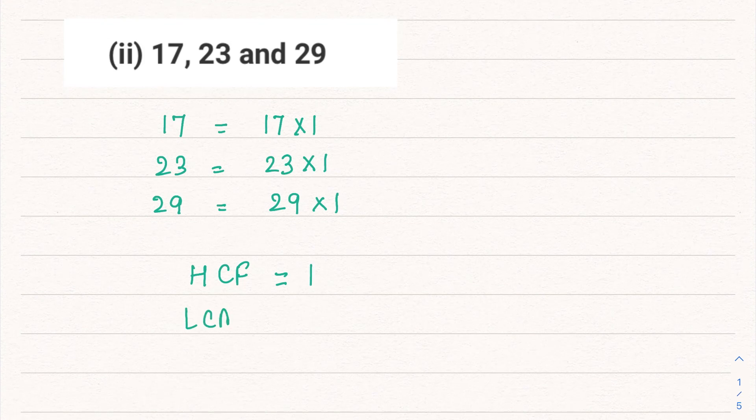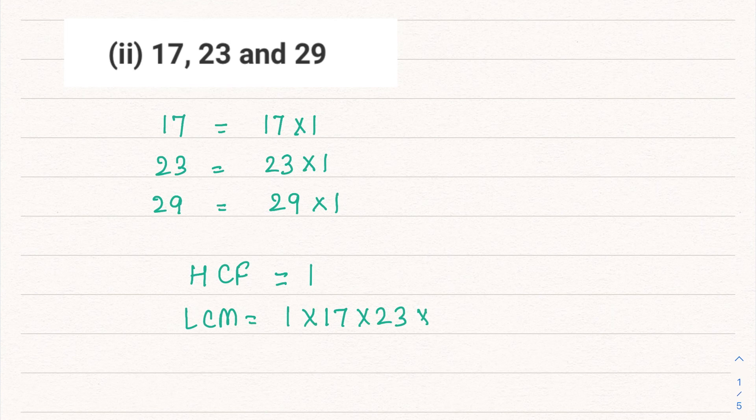In the LCM case, the common factor we write once and multiply by all the other factors. That means we have to multiply 17 × 23 × 29. Let's multiply and check.